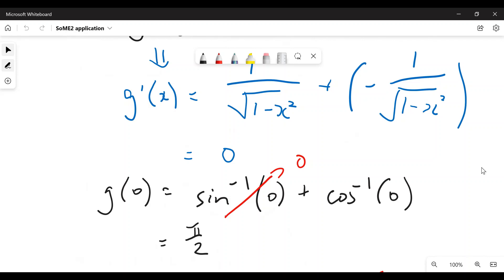Substitute x equals zero and then what you get, cosine inverse of zero is pi over two. And then you're done.